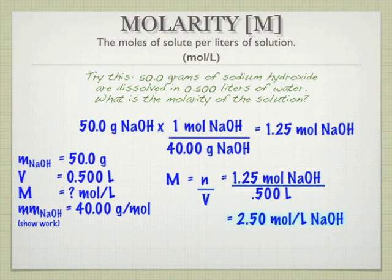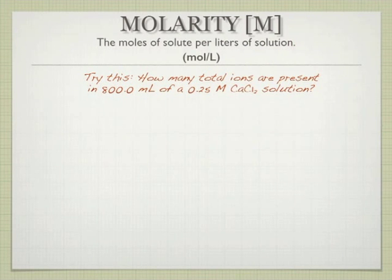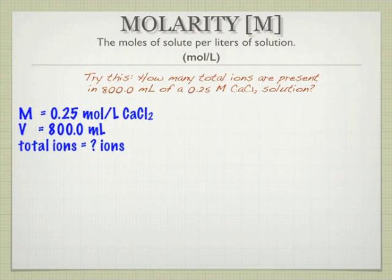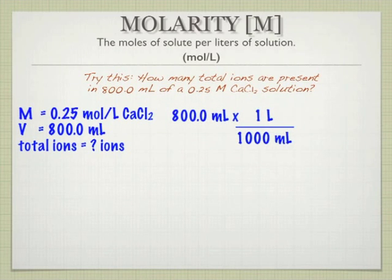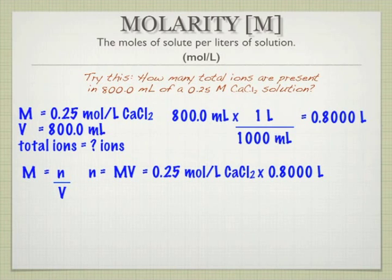Let's look at another example. How many total ions are present in 800 milliliters of 0.25 molar calcium chloride? I'm going to get my volume to liters just so it matches up with my units for molarity. We know that molarity is amount over volume, so if I solve for n, n equals molarity times volume. That is an extremely important equation right there - take note of that. When you multiply concentration times volume, what you're going to get are the moles.